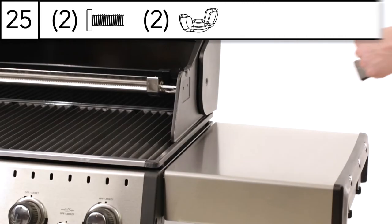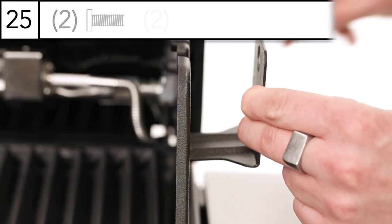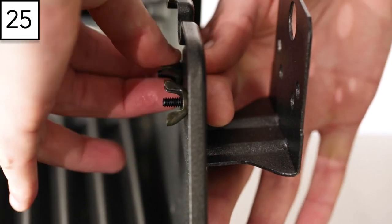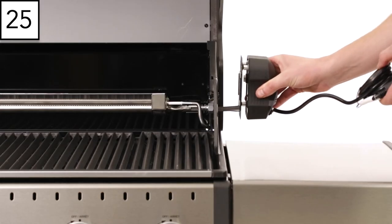Step 25. Install the rotisserie bracket. Install the bracket with two bolts and wing nuts. Now slide the rotisserie motor onto the bracket.